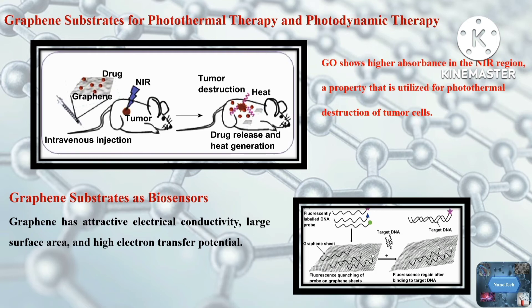Graphene-based biosensors rely on the fluorescence quenching properties of graphene. Researchers detected nucleic acids by tagging graphene oxide with fluorescence-labeled ssDNA. The graphene oxide quenches the fluorescence of the ssDNA. When the ssDNA comes into contact with the targeted complementary sequence, it forms a double helix structure, which displaces the graphene oxide from the ssDNA strand, resulting in fluorescence recovery.